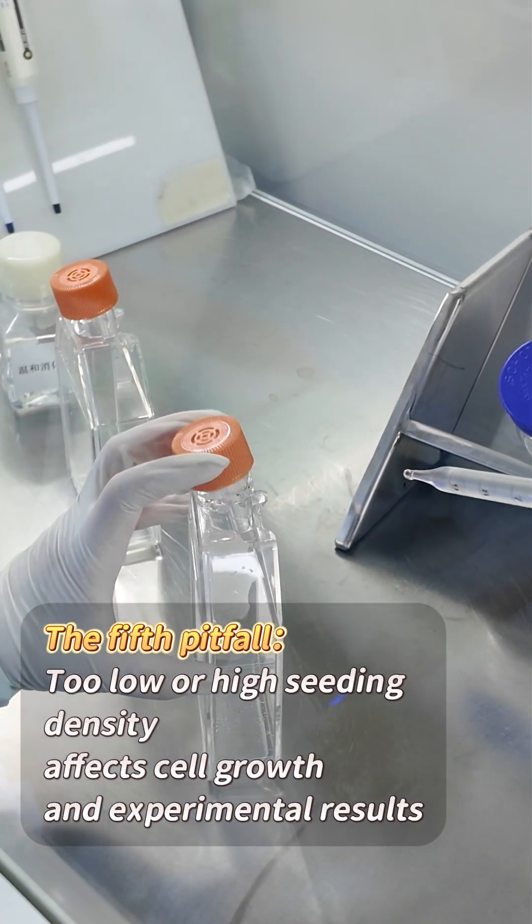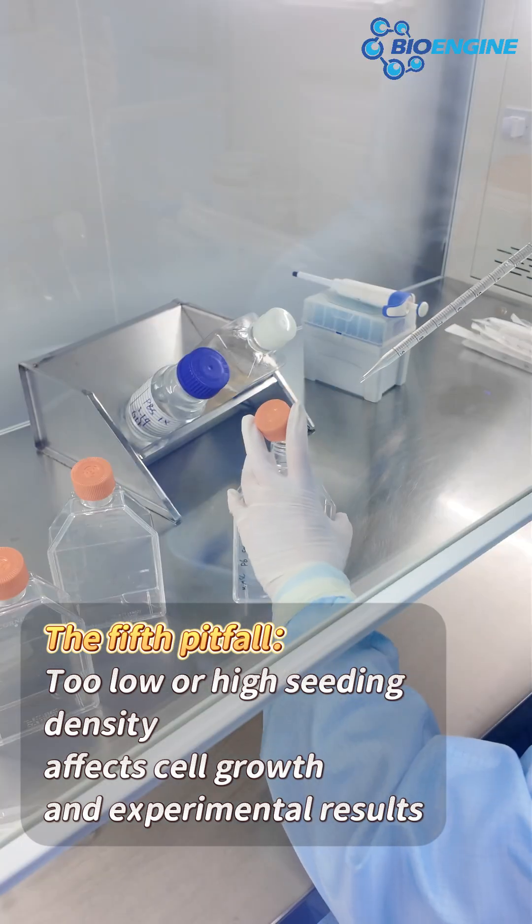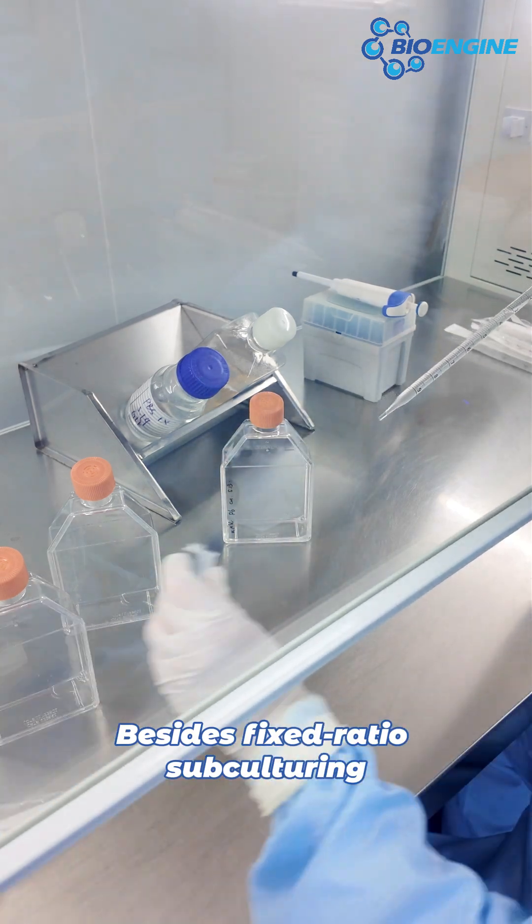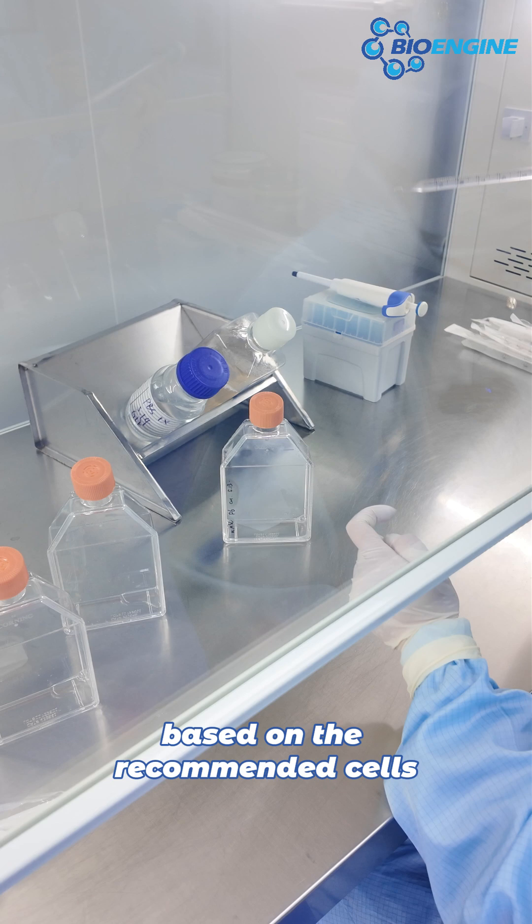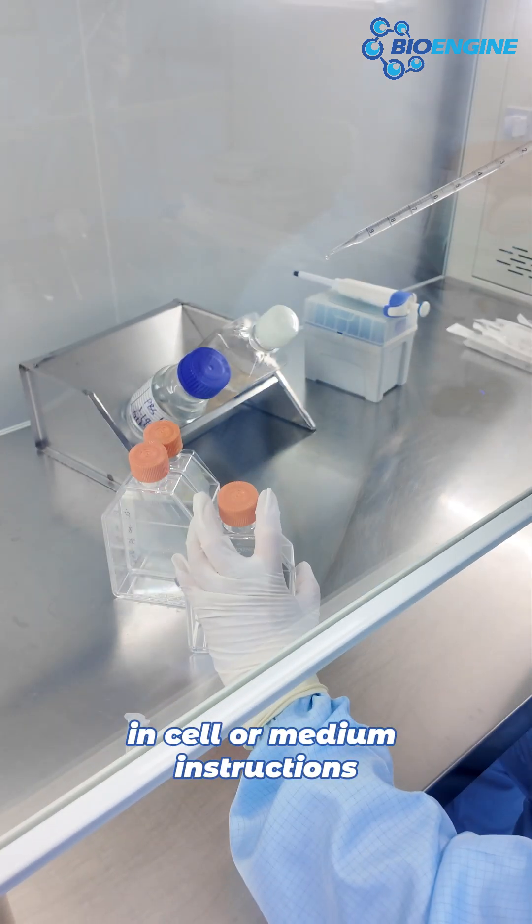The fifth pitfall: too low or high seeding density affects cell growth and experimental results. Besides fixed ratio subculturing, calculate seeding density based on the recommended cells per square centimeter in cell or medium instructions.